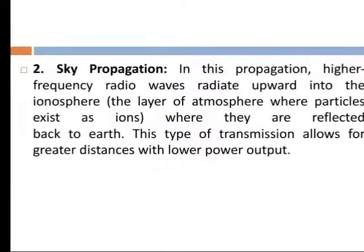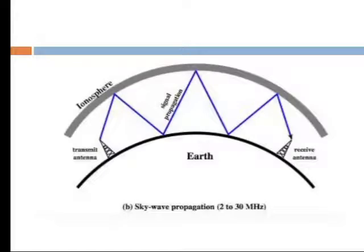In sky propagation, the higher-frequency radio waves radiate upward into the ionosphere — the layer of the atmosphere where particles exist as ions — where they are reflected back to earth. This type of transmission media allows for greater distances with low power output. Shortwave signals are transmitted through sky wave propagation, with frequencies between 2 MHz and 30 MHz.